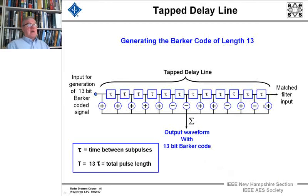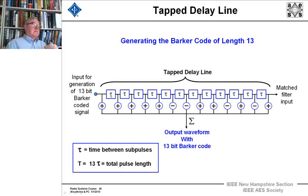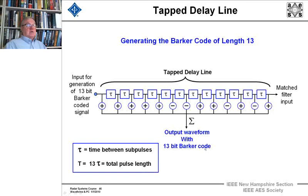You can implement these with tap delay lines, where you hold in a little memory — in the olden days they'd hold one bit, but you could certainly hold amplitudes now. What we do is we change the sign or not change it according to the code, and then the output is summed with the 13-bit Barker code. And the matched filter input comes out here.